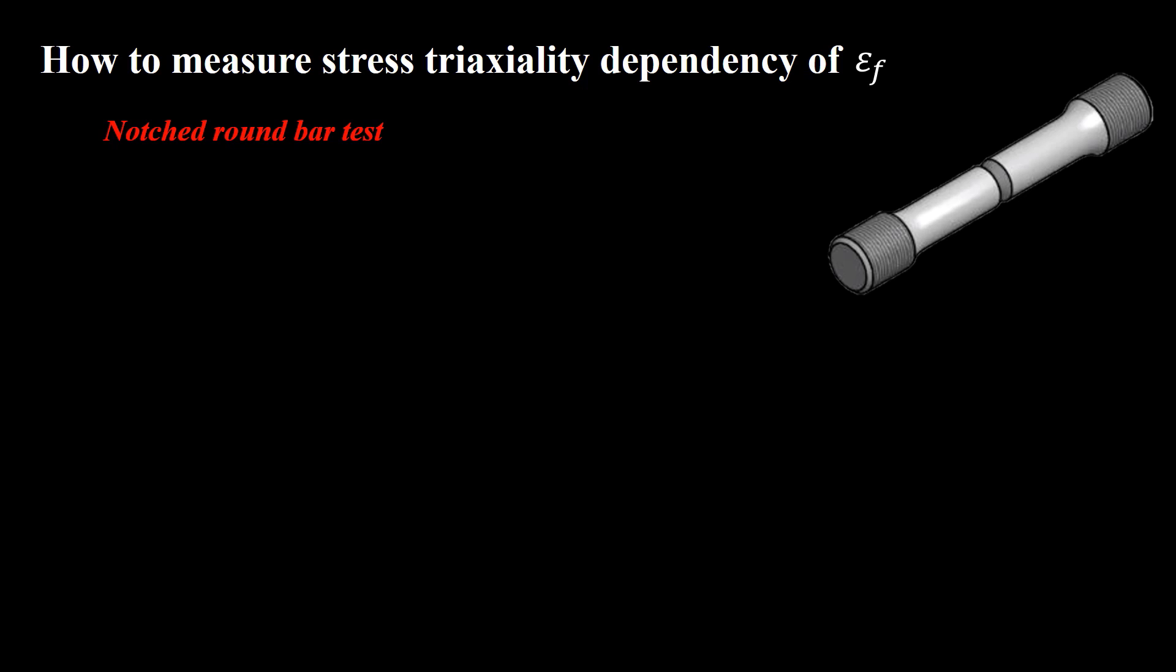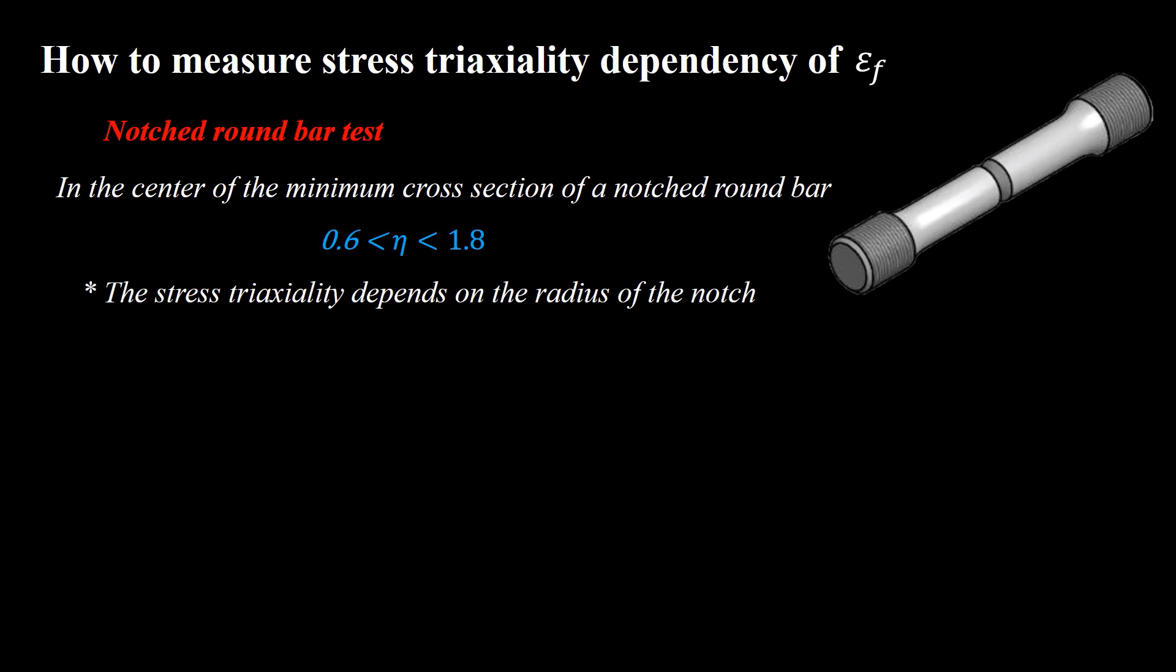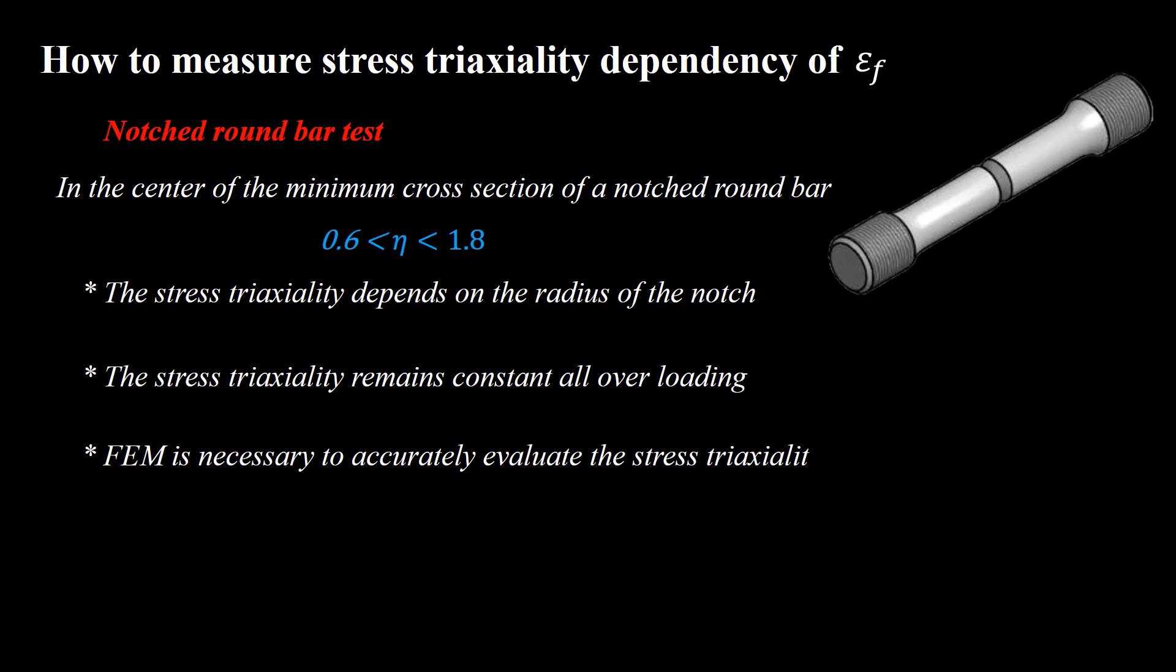In the center of the minimum cross section of a notched round bar, stress triaxiality can vary in a large range based on the geometry. This test has significant advantages. First, it allows probing a wide range of stress triaxiality by changing the radius of curvature of the notch. Second, the stress triaxiality remains relatively constant all over the deformation process in the center of the minimum cross section. Please note that finite element simulations are necessary to accurately evaluate the stress triaxiality, as will be explained in next videos. It is noteworthy that a standard procedure to test cylindrical notched round bars and interpret the results has been developed by the European Structural Integrity Society. At last, it is important to mention that measuring the relationship between fracture strain and stress triaxiality for your specific material needs some remarkable experimental efforts.